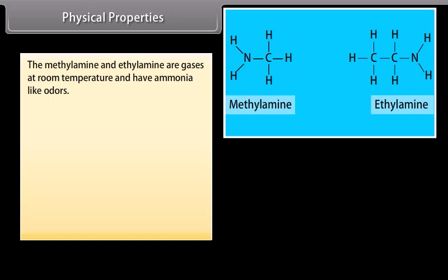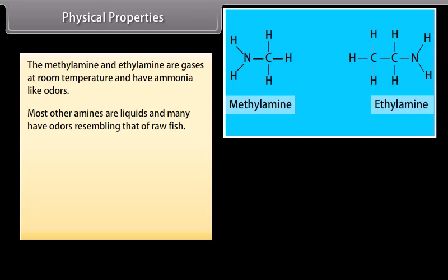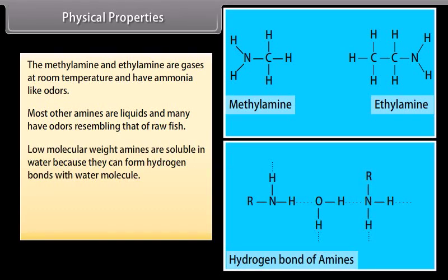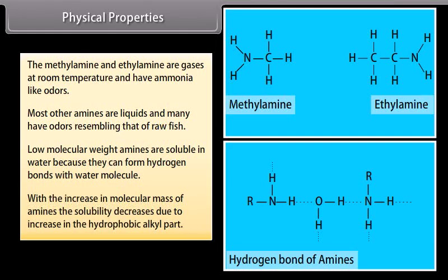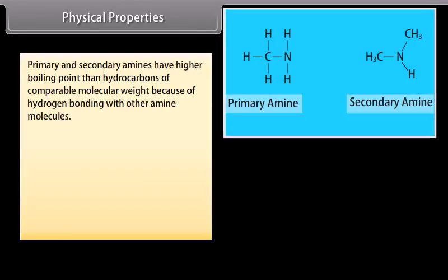Methylamine and ethylamine are gases at room temperature with ammonia-like odors. Most other amines are liquids with odors resembling raw fish. Low molecular weight amines are soluble in water because they can form hydrogen bonds with water molecules. With increasing molecular mass, solubility decreases due to the increase in the hydrophobic alkyl part. Primary and secondary amines have higher boiling points than hydrocarbons of comparable molecular weight because of intermolecular hydrogen bonding.